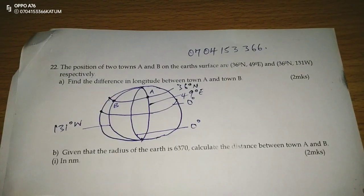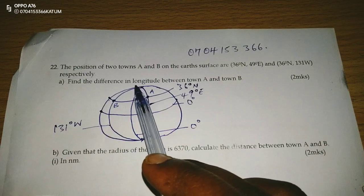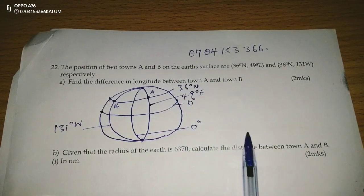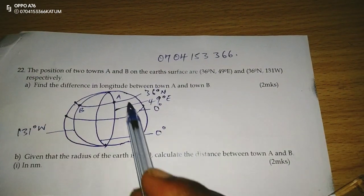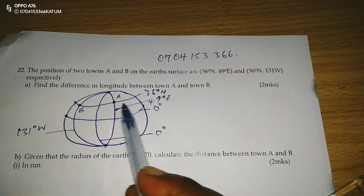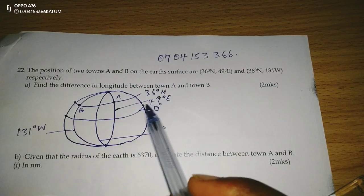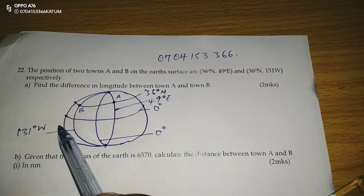We are told now to first of all determine the difference in longitude between town A and B. So from A, which is 49 in the east and B, 131 in the west.